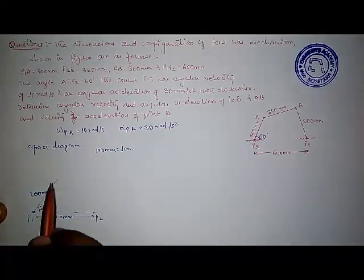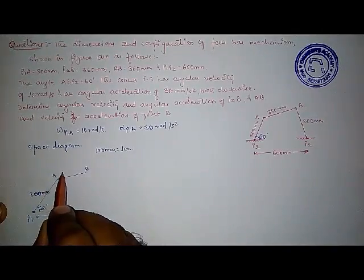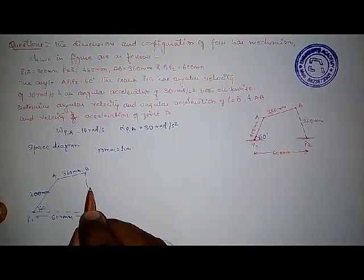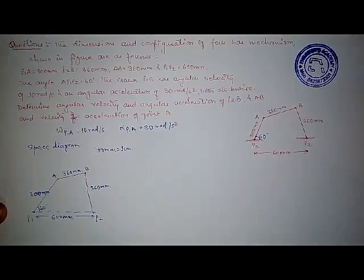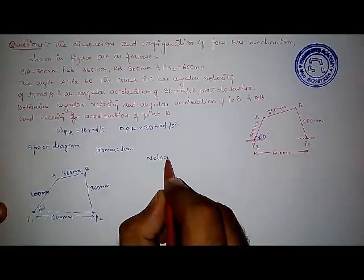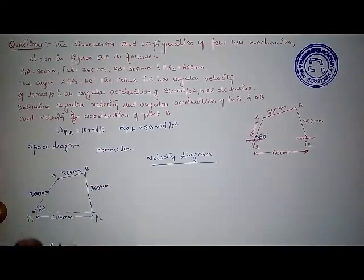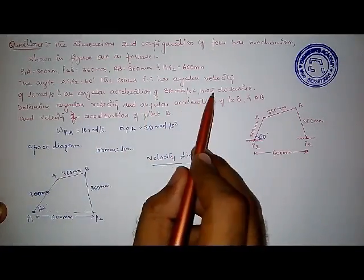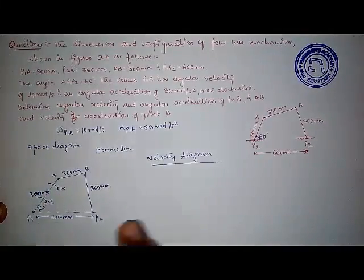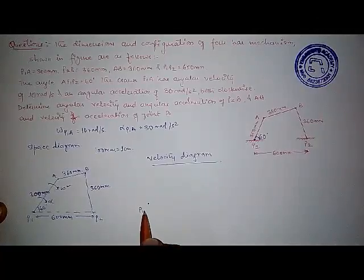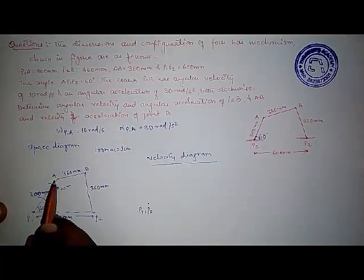This line for link P1A will be 3 cm, since P1A is 300 mm. AB will be 3.6 cm, and from B to BP2 it will again be 3.6 cm. This gives us our space diagram or configuration diagram. Using this diagram we will find the velocity diagram. The fixed links are P1 and P2. Both directions — omega and alpha — are given as clockwise, but for the velocity diagram we only need omega.